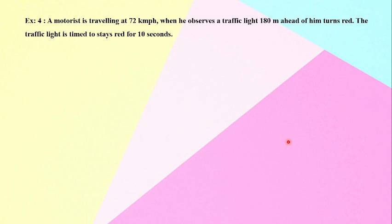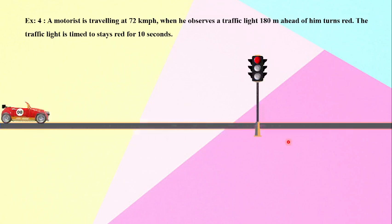Let us understand this by means of an animation. A motorist is initially traveling with a velocity of 72 kilometers per hour when he was at this particular location. He observes that there is a red signal, and this particular signal post is at a distance of 180 meters. So when the car was at a distance of 180 meters, he observes that the signal is red and that red signal is going to stay for 10 seconds.